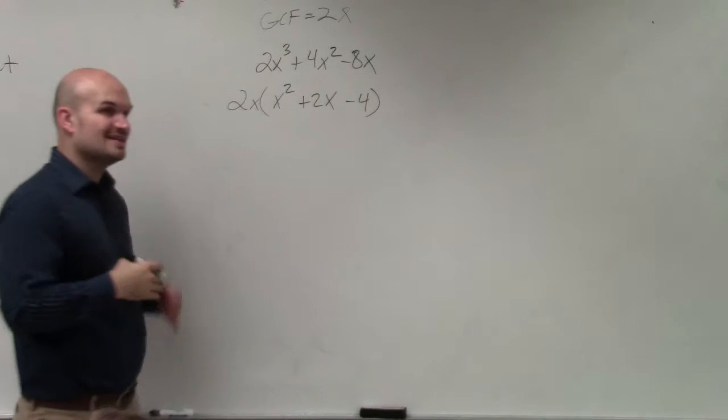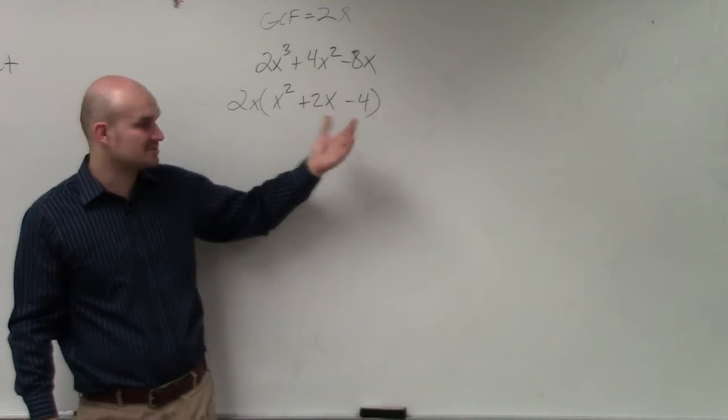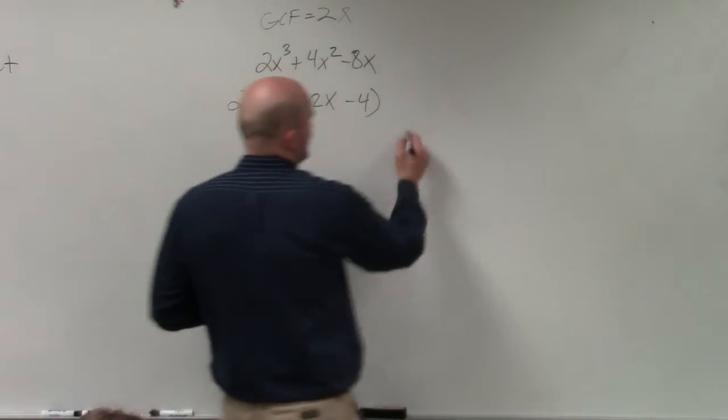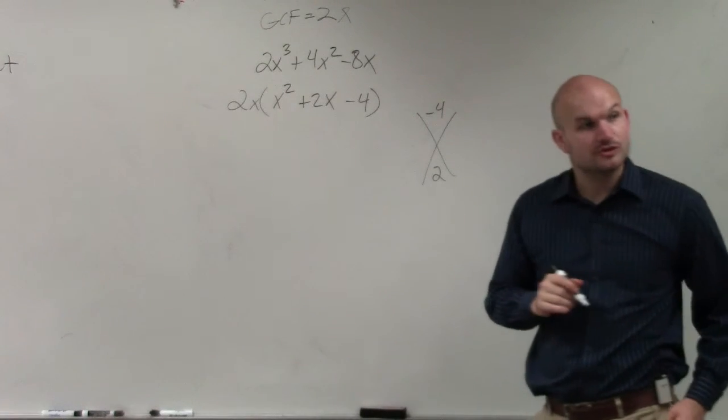Now, we always want to see if we can continue to factor this down, because this is a trinomial. We know we can still factor down trinomials. So remember, basically what we're looking for is what two numbers multiply to give us negative 4, but then add to give us a positive 2.